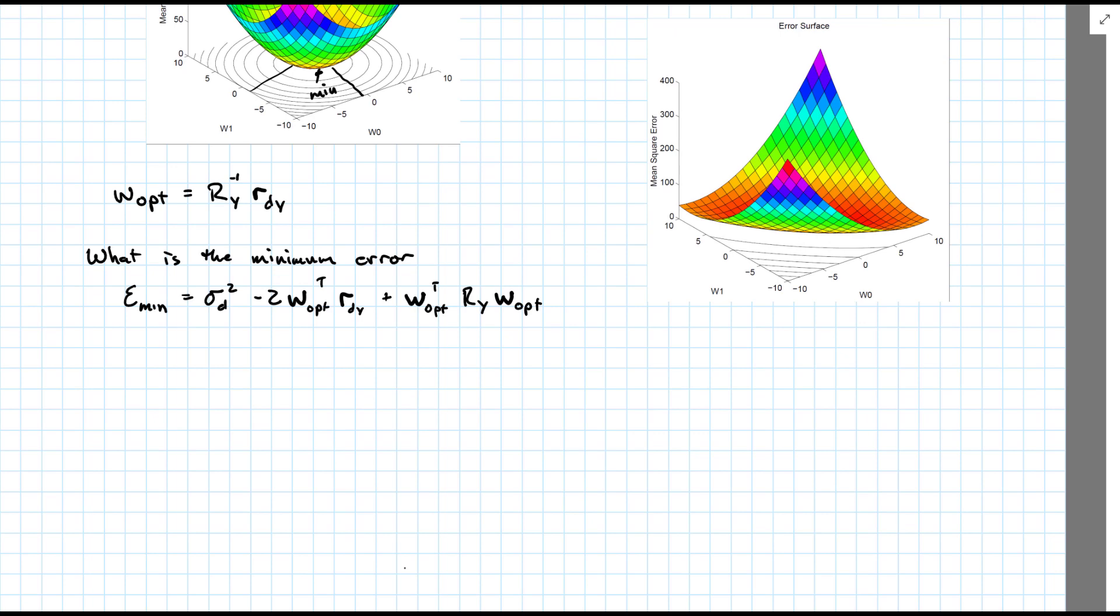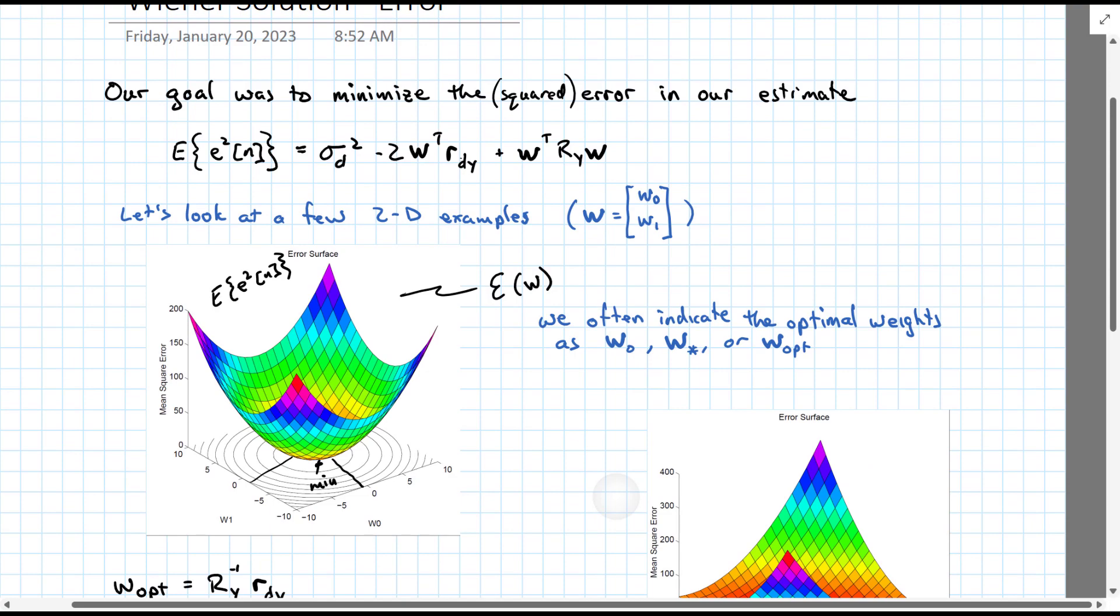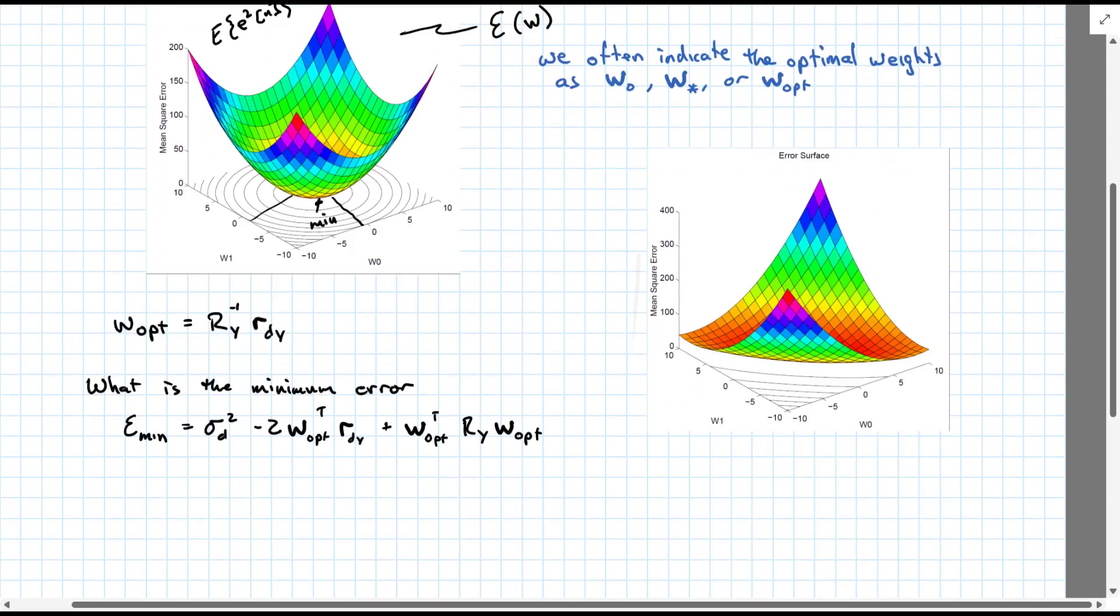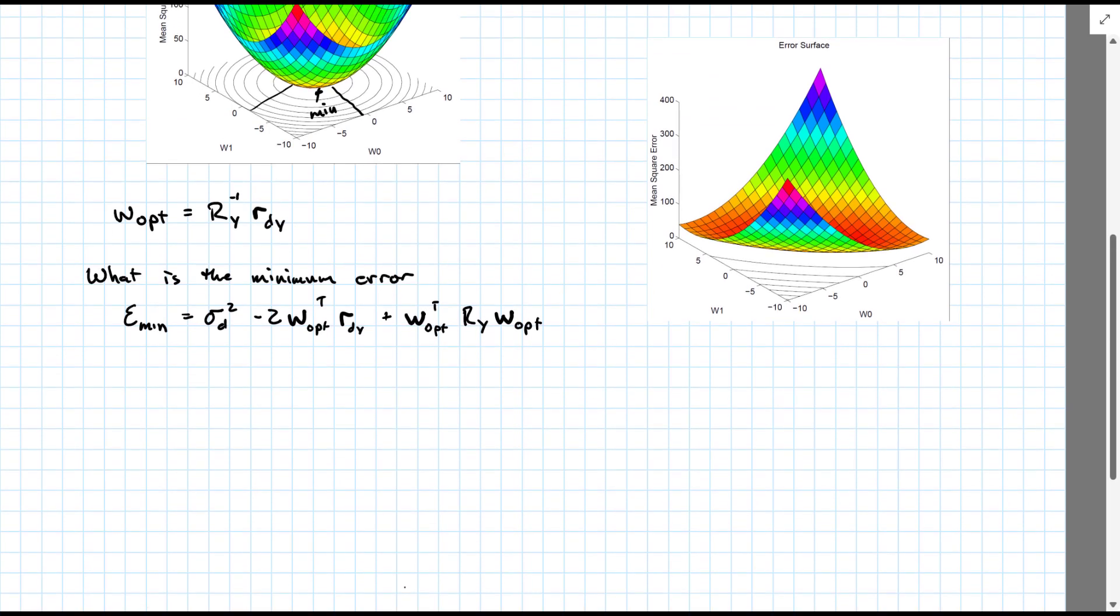Okay, so we have our error equation from before. And all we've done is replaced our generic w's with the optimal ones by changing the subscripts. But let's go a little bit further.